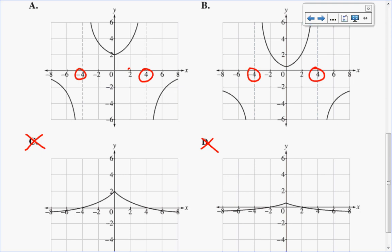The next difference that I see in these graphs is they have different y-intercepts. So I'm going to examine the y-intercepts in my original function to narrow it down to being either A or B.